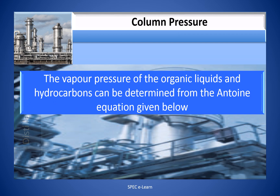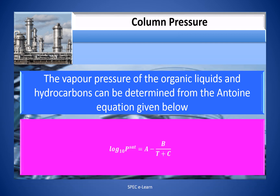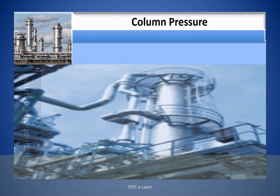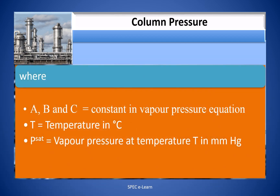The vapor pressure of organic liquids and hydrocarbons can be determined from the Antoine equation given below: log base 10 of P_sat equals A minus B divided by (T plus C), where A, B, and C are constants in the vapor pressure equation, T is temperature in degrees centigrade, and P_sat is the vapor pressure at temperature T in mmHg.